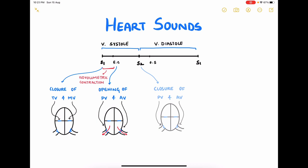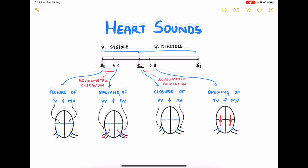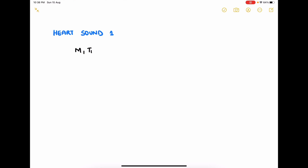The second heart sound is produced due to closure of the pulmonary valve and aortic valve at the onset of ventricular diastole as shown in the diagram. The opening snap is produced due to opening of the tricuspid valve and mitral valve a little after the onset of ventricular diastole. That would mean that the period between the second heart sound and the opening snap accounts to isovolumetric relaxation of the ventricles.